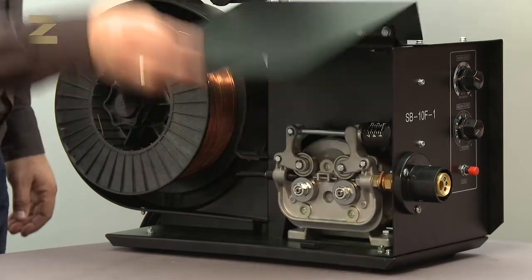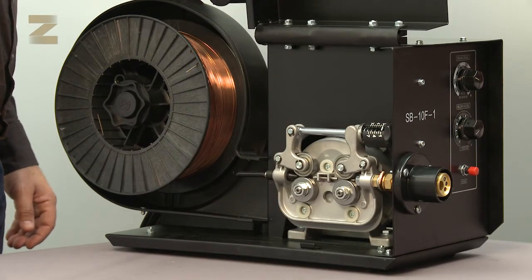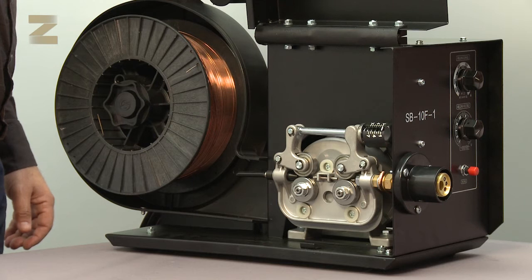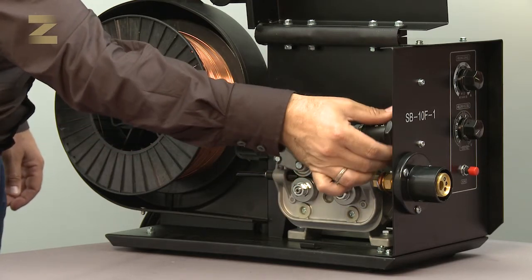Now open the feeder cover. You can now see the motor and four drive wheels. Between the two top feed wheels and the two bottom feed wheels, there is a pressure adjustment lever. Release the pressure until you can lift the two top wheels.